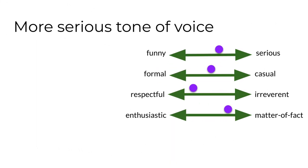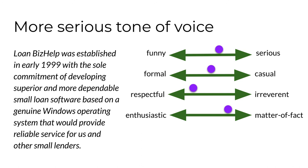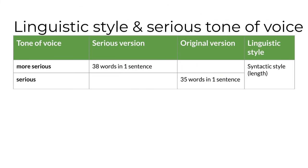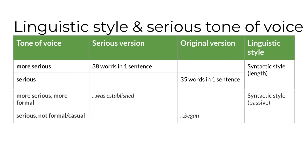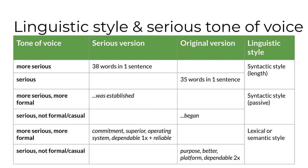I also rewrote the message with a more serious tone. The original version was already on the serious side of the continuum, but here's a version that I think is even more serious — and I think it's moved the message toward the formal side as well. The syntactic style of the more serious version is about the same sentence length as the original, but there is a syntactic difference: the more serious, more formal version uses passive structure — was established. The serious version also uses lexical or semantic variation to create more serious and more formal vocabulary: commitment instead of purpose, superior instead of better, operating system instead of platform. Additionally, the serious version uses reliable as a synonym for dependable instead of repeating the same word.